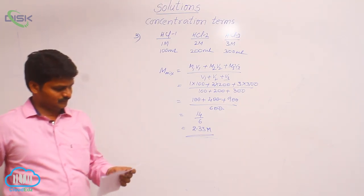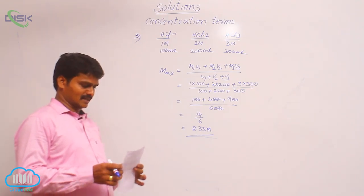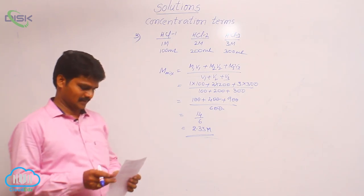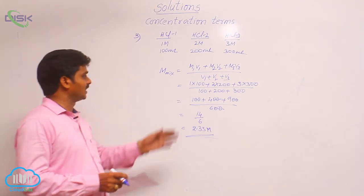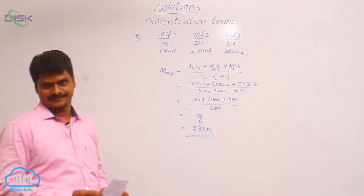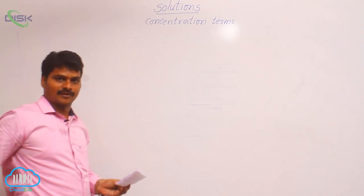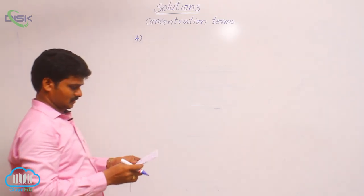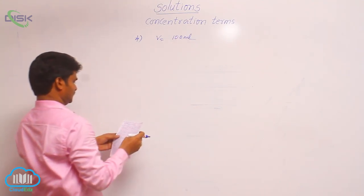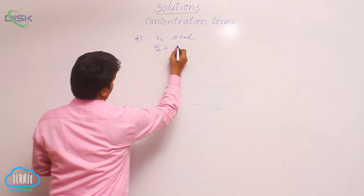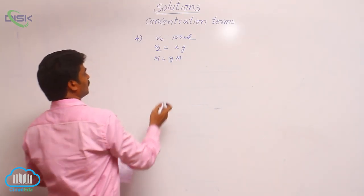Now the fourth question. The concentration of 100 ml of solution containing x grams of Na2CO3 is y molar. We need to find the values of x and y. Two terms are missing from the formula. Only the volume of solution — 100 ml — is given. The weight of solute is x grams, and the molarity is y molar. We have to find out both x and y.